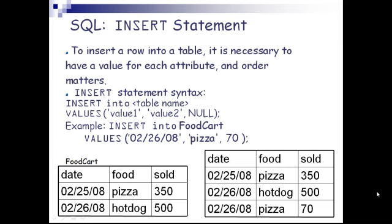INSERT example: INSERT INTO food_cart VALUES ('02/26/08', 'pizza', 70). So the date goes to the date column, 'pizza' belongs to the food field, and 70 is the amount to be added in the sold field.